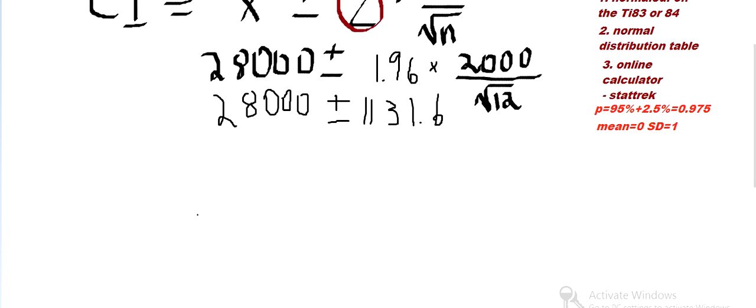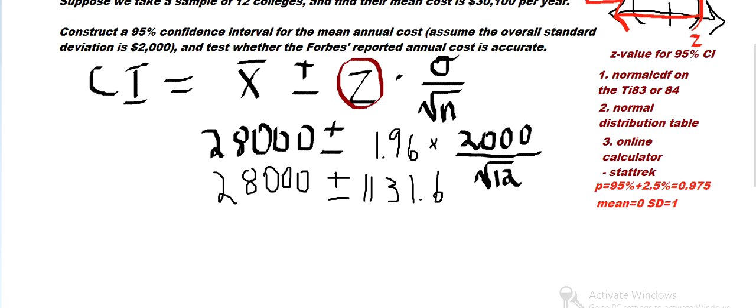So we pop this in the calculator and it got 1131.606. So $28,000 plus or minus 1131.606. So that means the confidence interval is going to be $28,000 minus 1131.606 to $28,000 plus 1131.606.